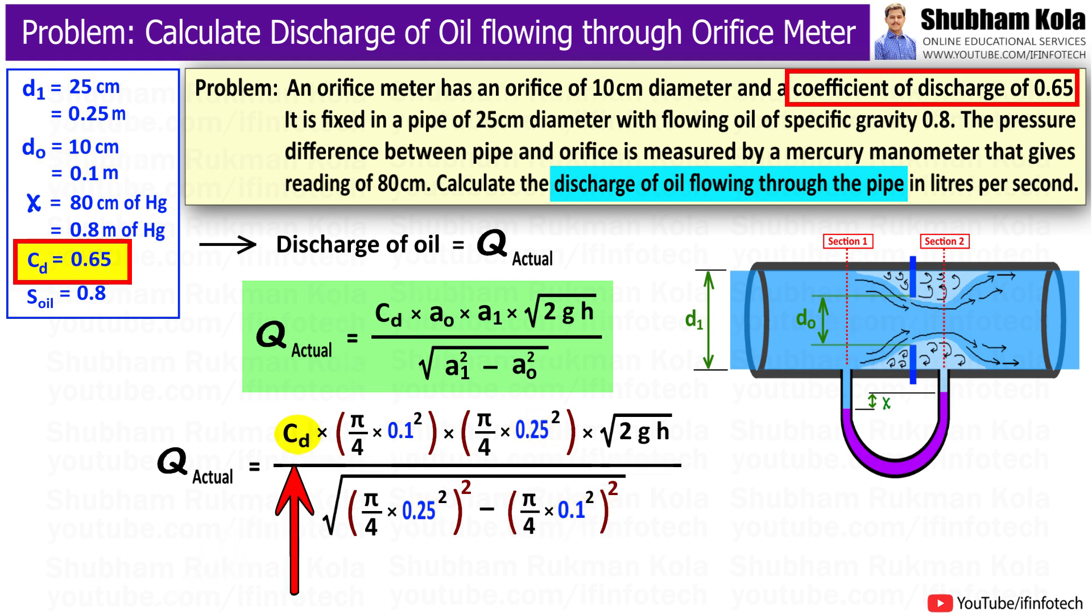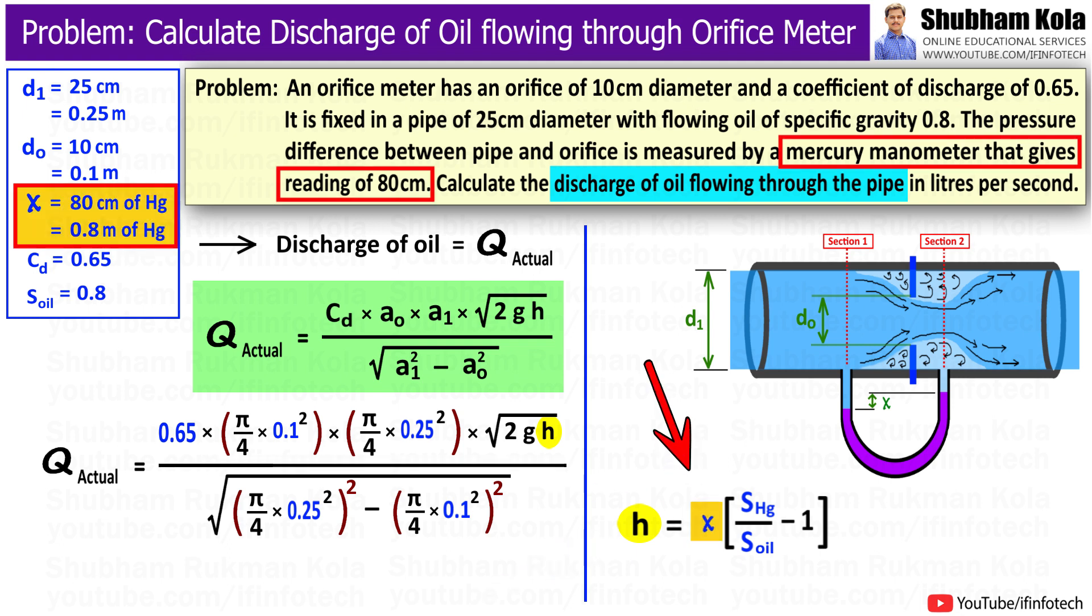In this formula, the value of coefficient of discharge, cd, has already been given in problem as 0.65. And also, we have to calculate h, which is the difference in pressure head, that we can calculate by using x value.